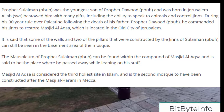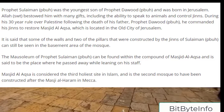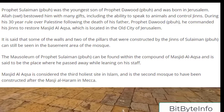It is said that some of the walls and pillars of Masjid Al-Aqsa were constructed by the jinns of Prophet Suleiman (Solomon). Masjid Al-Aqsa is considered the third holiest site in Islam, after Masjid Al-Haram in Mecca and Masjid Al-Nabawi in Medina.